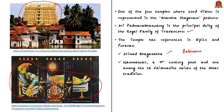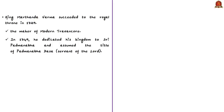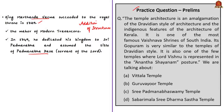Nammalwar composed ten hymns in praise of Lord Padmanabha — he was a ninth-century poet and one among the 12 Vaishnava saints of the Alwar tradition. Some scholars and historians have expressed the view that this temple was established on the first day of Kali Yuga. Regarding the Travancore royal family, King Marthanda Varma, who succeeded to the royal throne in 1729, added a few structures to the temple. In 1749, he dedicated his kingdom to Sri Padmanabha and assumed the title of Padmanabha Dasa, meaning 'servant of Lord Padmanabha Swami.'